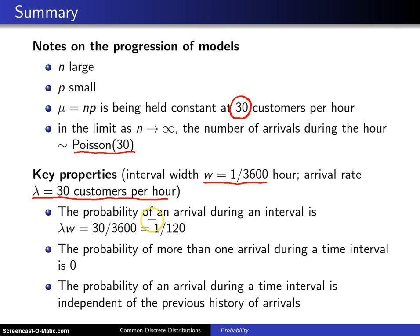The probability of an arrival during one particular interval is lambda, which is the rate, 30 customers per hour, times w, which is the interval width, 1 over 3600, and that probability is 1 over 120. In a Poisson process, we assume that the probability of two people walking through the door at exactly the same time is zero. We eliminate the possibility of ties.